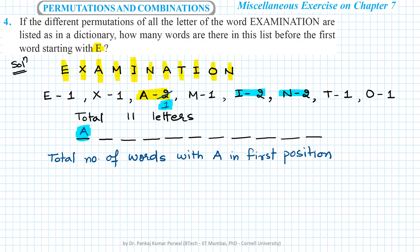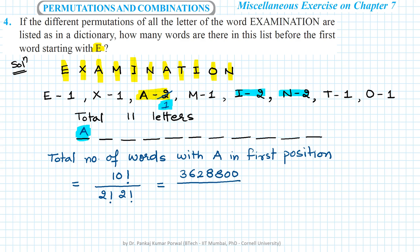With A in the first position, I am left with 10 letters, of which I repeats twice and N repeats twice. So the total number of arrangements is 10! divided by 2! times 2!. Calculating: 10! equals 3,628,800, divided by 4 gives 907,200. So there are a total of 9,07,200 words starting with A, and that is the number of words in the list before the first word starting with E appears.